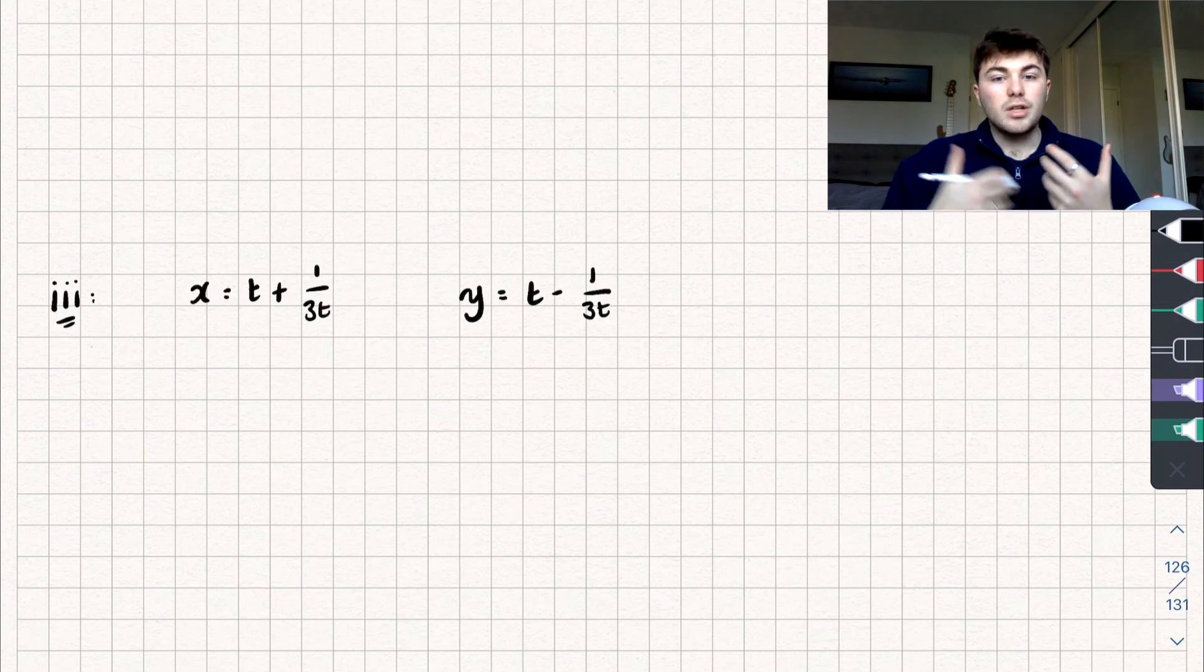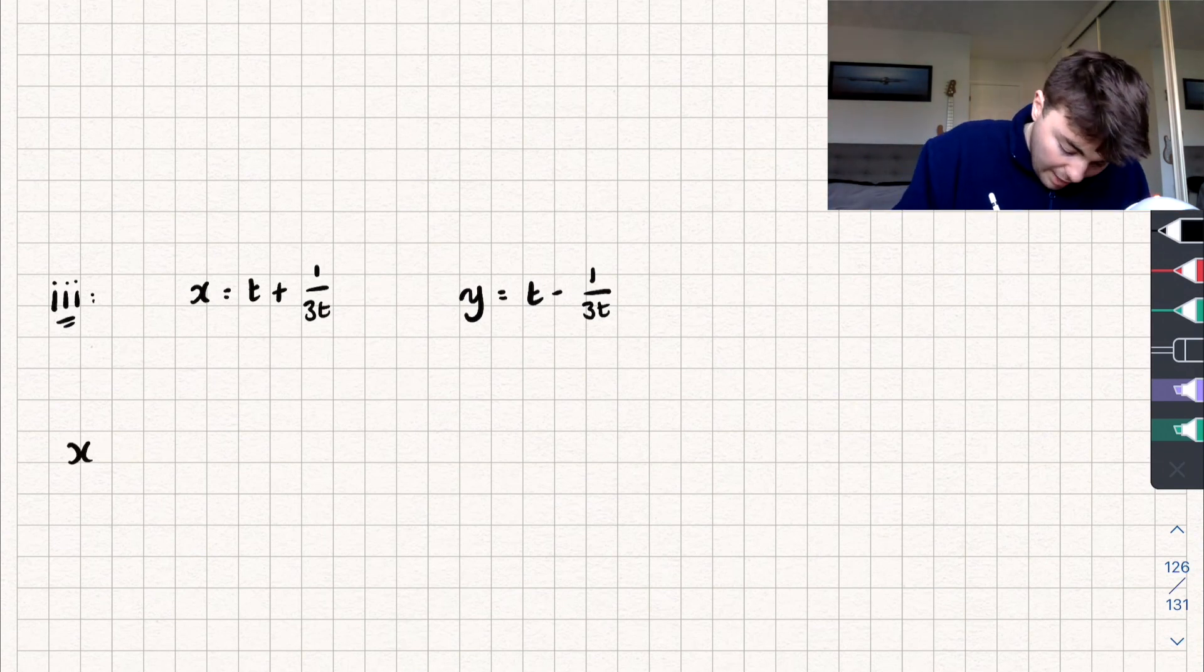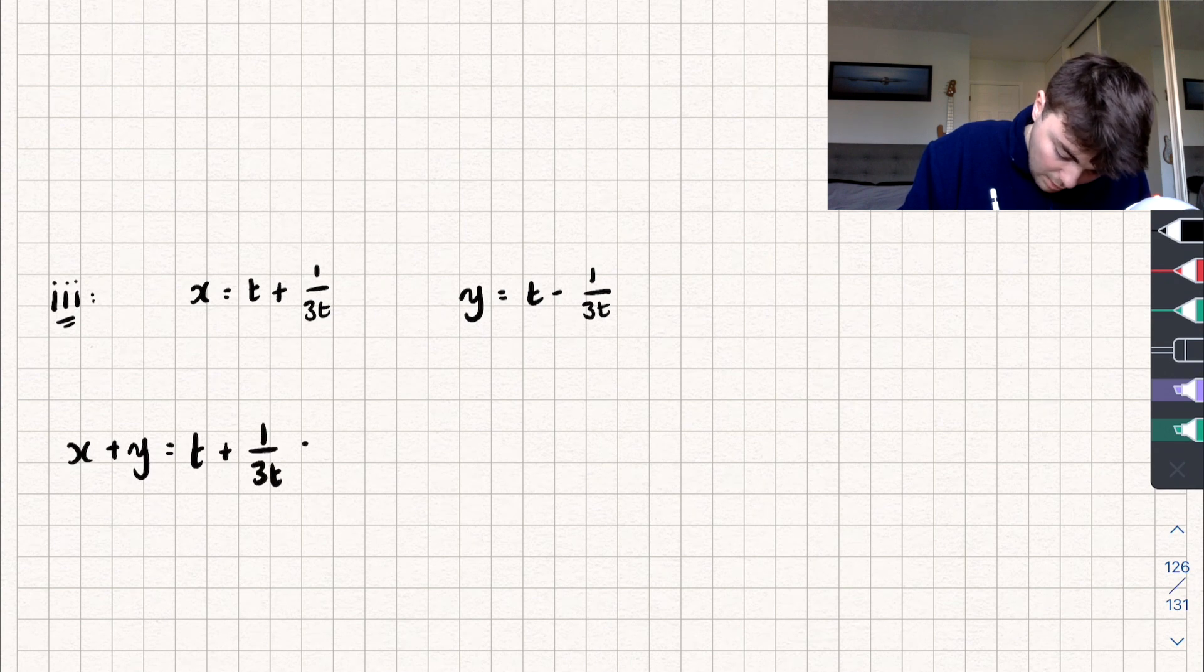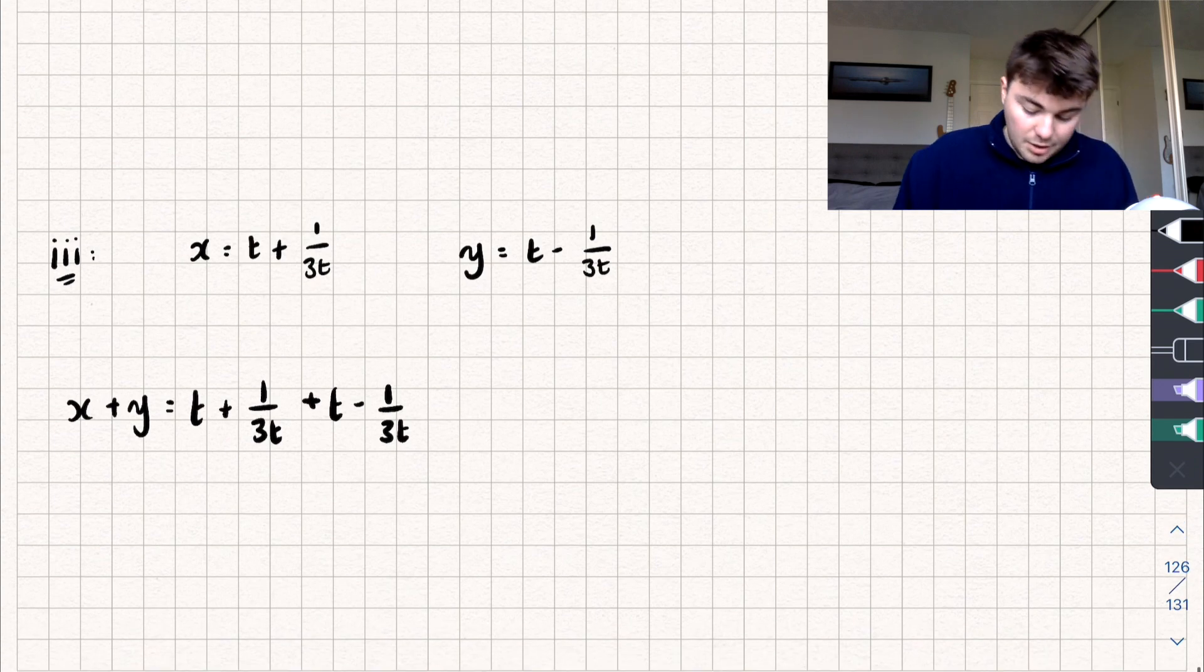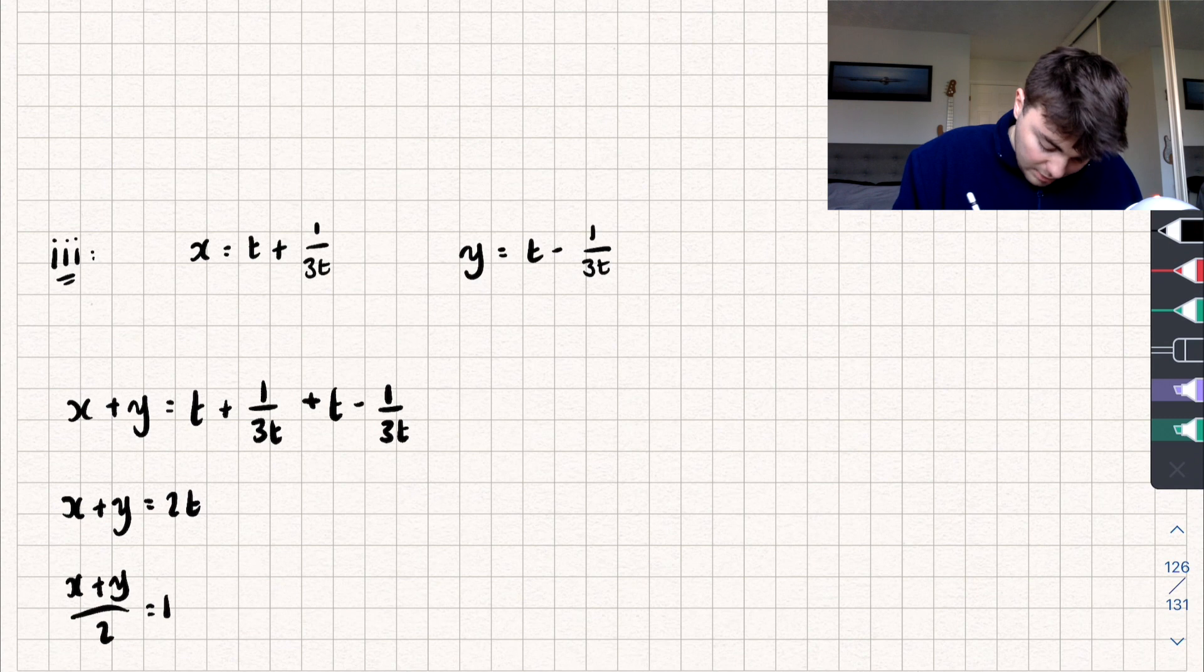And so what we could do is treat them like simultaneous equations and add them together. And let's see what happens when we do that. Well, if we add them, we get that x plus y is going to be equal to t plus 1 over 3t plus t subtract 1 over 3t. And you can see the 1 over 3t's cancel out. And we get that x plus y is equal to 2t. And dividing both sides by 2, we get that x plus y divided by 2 is equal to t.